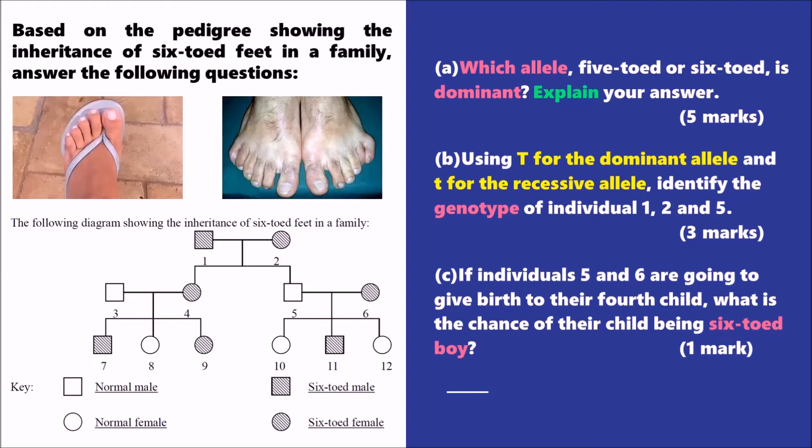Part B requires us to determine the genotype composition of individuals 1, 2, and 5. Part C is a very typical question in the basic genetics topic — we need to find out the chance of giving birth to a child with a particular phenotype.